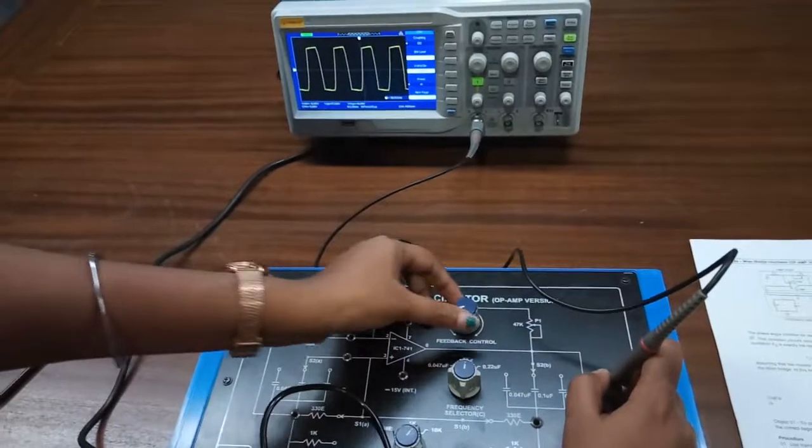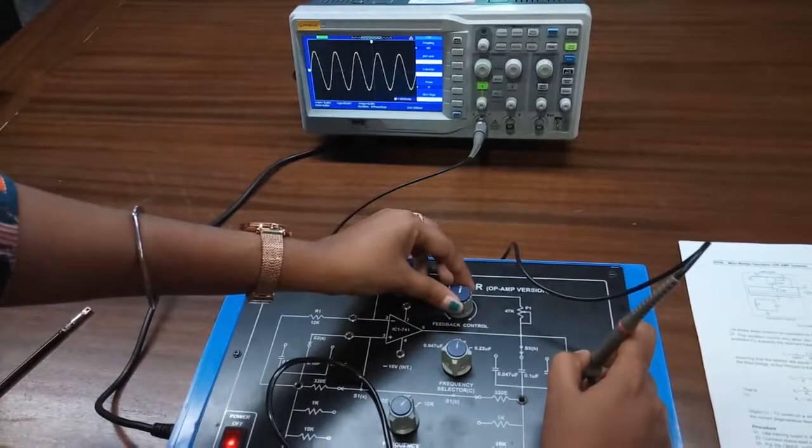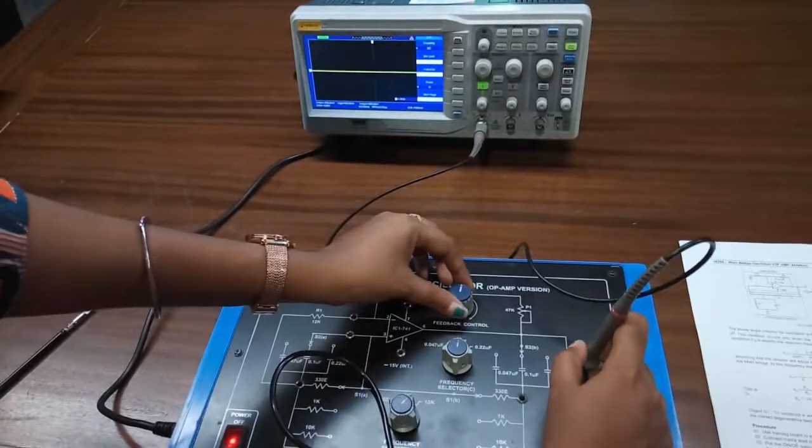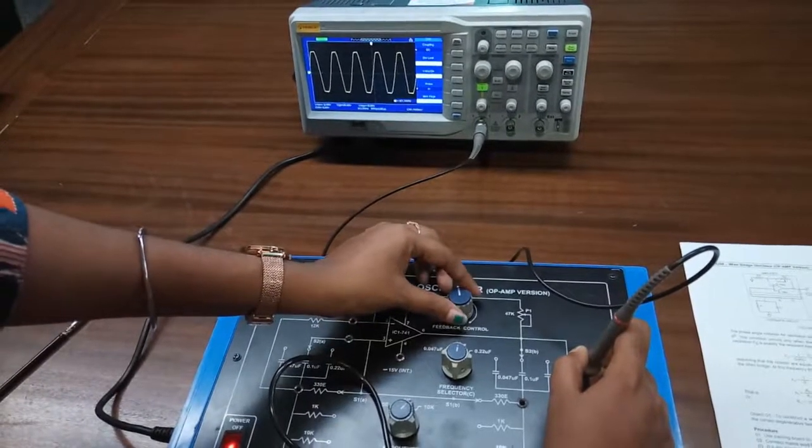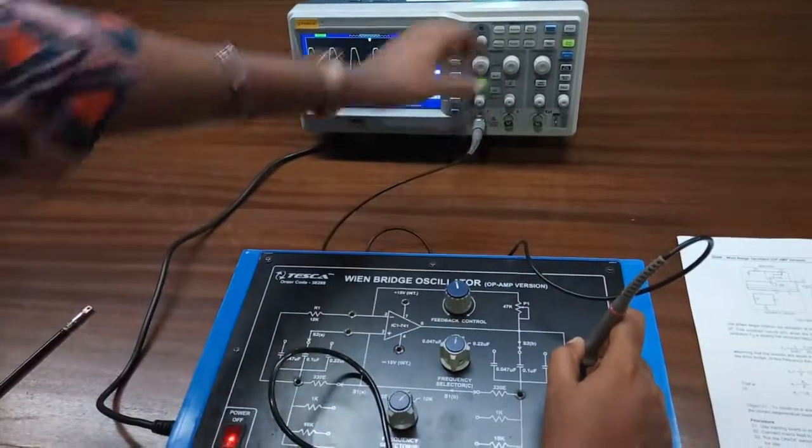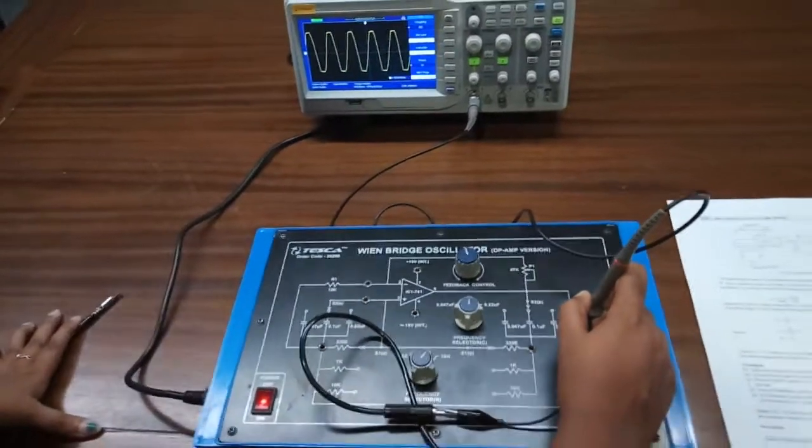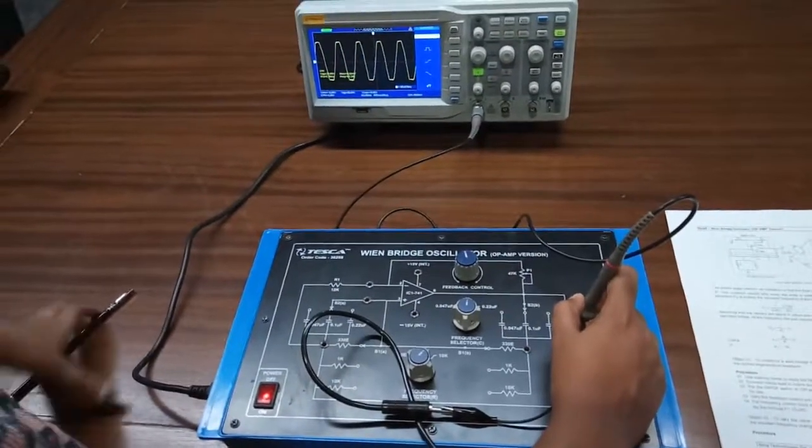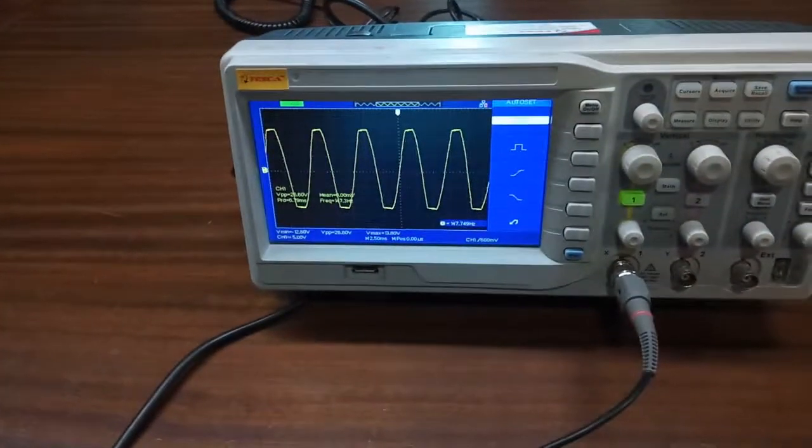Now vary this potentiometer until you get a clean waveform. We can see from here the frequency is around 147.3 hertz.